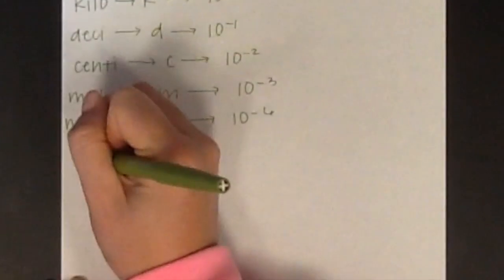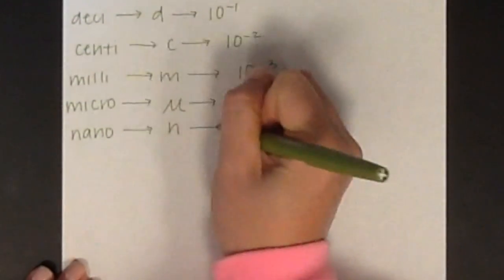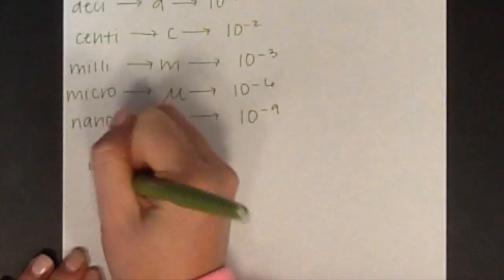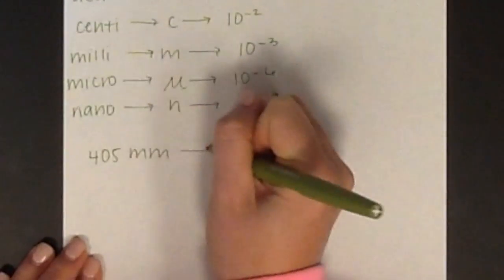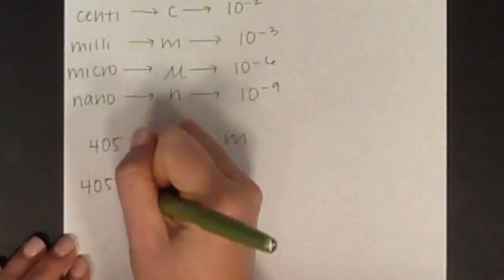For example, if you have 405 millimeters and you want to convert to meters, then you must divide 405 by 10 to the 3 because there are 10 to the 3 millimeters in one meter.